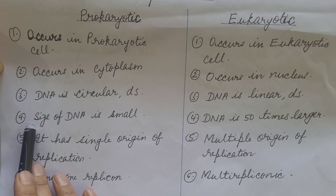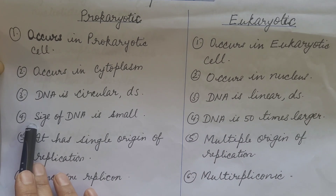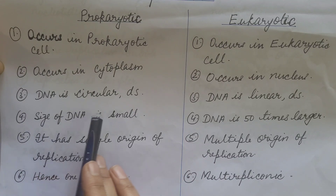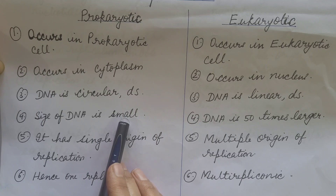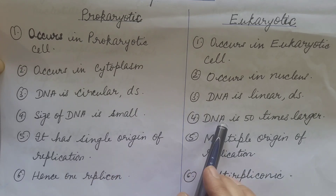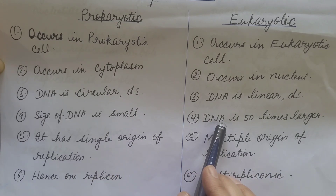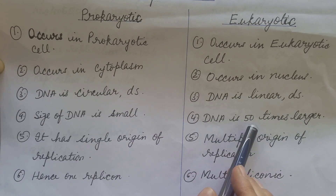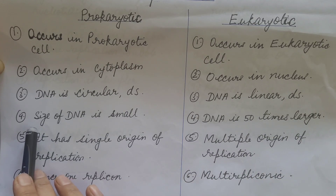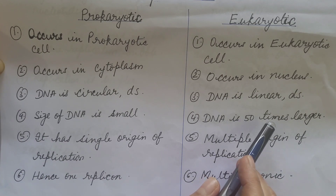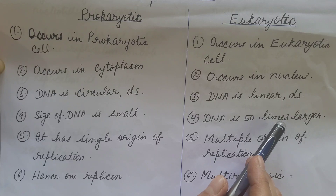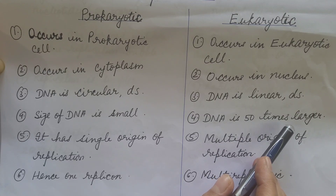If we talk about size, the size of DNA is small in prokaryotes — or we can say it has a lesser amount of DNA. In eukaryotes, DNA is 50 times larger compared to prokaryotes, and hence has a greater amount of DNA.